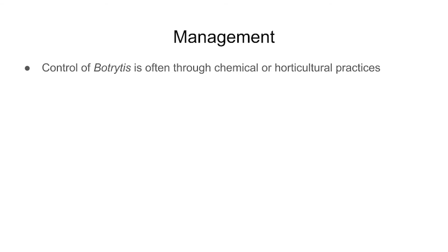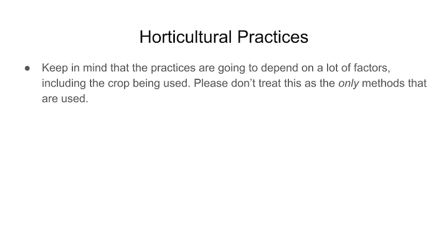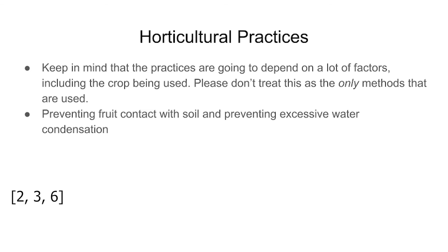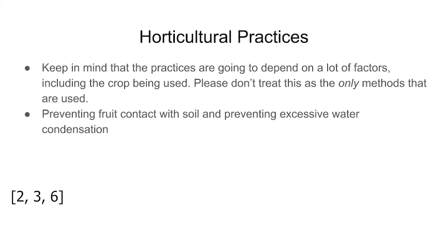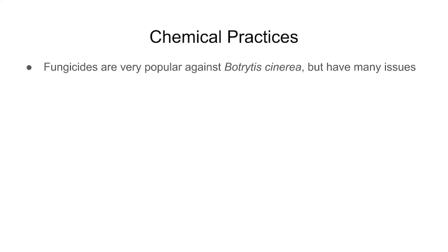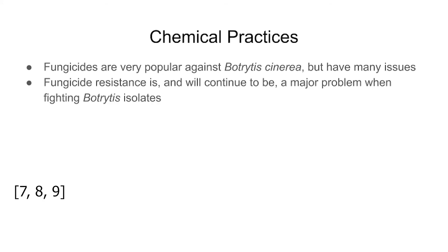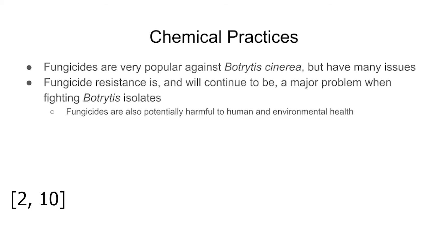Management takes different forms. Currently, the way to deal with gray mold is often through horticultural or chemical practices. Horticultural practices include preventing fruit falling to the soil and making sure water condensation doesn't occur on leaves, since Botrytis cinerea is very effective in high humidity, like many other fungal plant pathogens. Another practice is ensuring sufficient airflow between canopies and preventing excessive canopy growth. Chemical means are also common but present many problems — fungicide resistance among Botrytis isolates is becoming increasingly common, and fungicides are potentially harmful to human and environmental health.